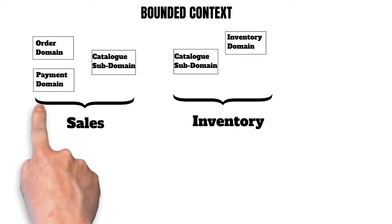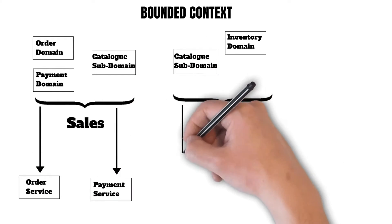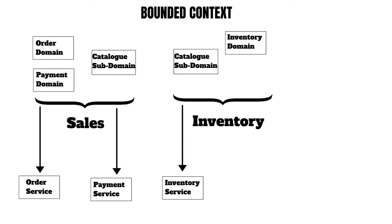A bonded context may contain one or more microservices. The sales bonded context here will have two services: the order service and the payment service. The inventory bonded context will have one microservice: the inventory microservice. The order service is bonded to the order domain in the sales bonded context, the payment service is bonded to the payment domain in the sales bonded context, and the inventory service is bonded to the inventory domain in the inventory bonded context.